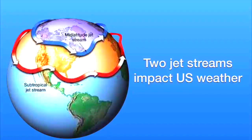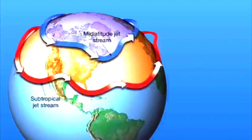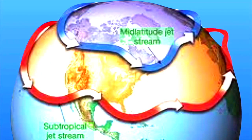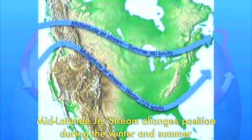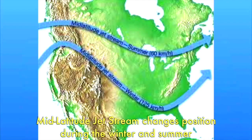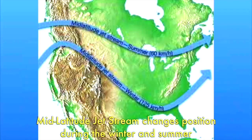There are really two jet streams that impact the United States. The mid-latitude jet stream happens on the border of Canada and the United States, and the subtropical jet stream happens much closer to the tropics. It's the mid-latitude jet stream that has the biggest impact on our weather from day to day to yearly conditions. Because vertical rays are shifting north or south of the equator seasonally, they impact this mid-latitude jet stream.